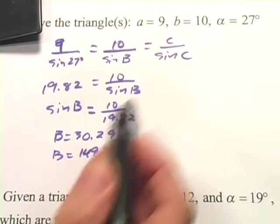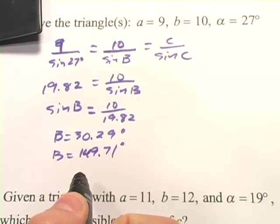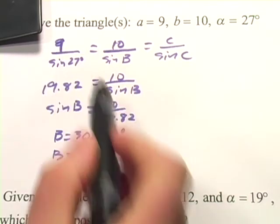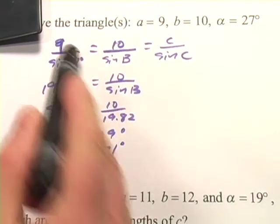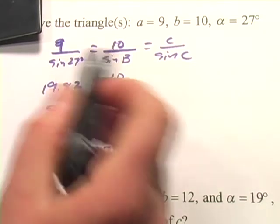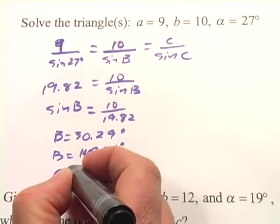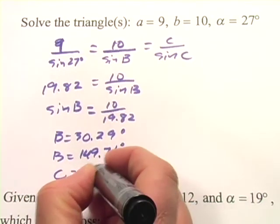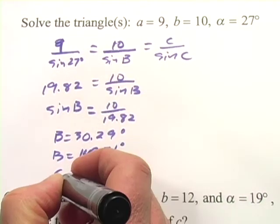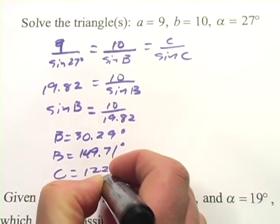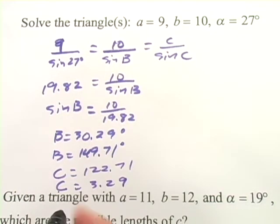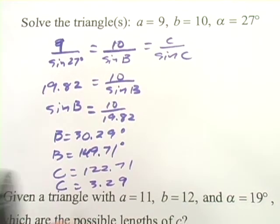What this means is that there are two different possible values for C, and we can find those simply by subtracting this plus 27 from 180 and this plus 27 from 180. So in this case, C could equal either 122.71 or 3.29. So now we have all the angles of two possible triangles.